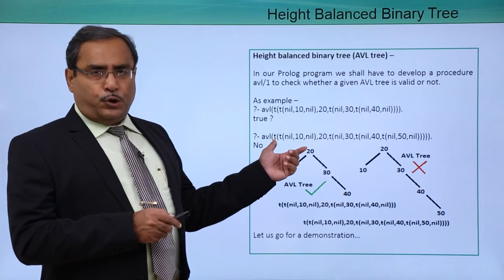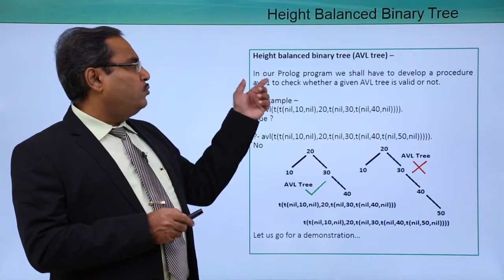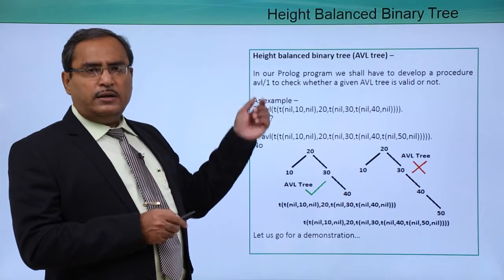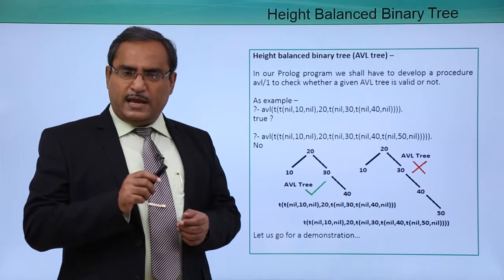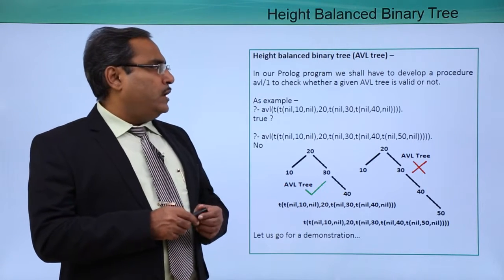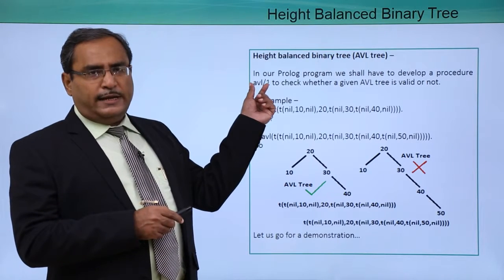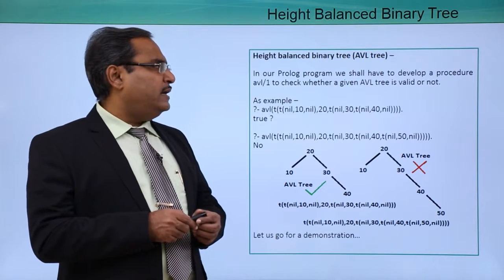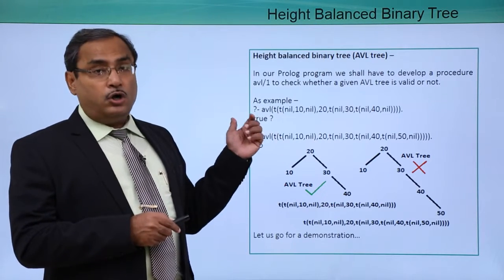In our program, we shall write a clause that is avl/1. So avl/1 means the predicate name will be avl and it takes only one argument. We shall develop a procedure avl/1 to check whether a given AVL tree is valid or not.